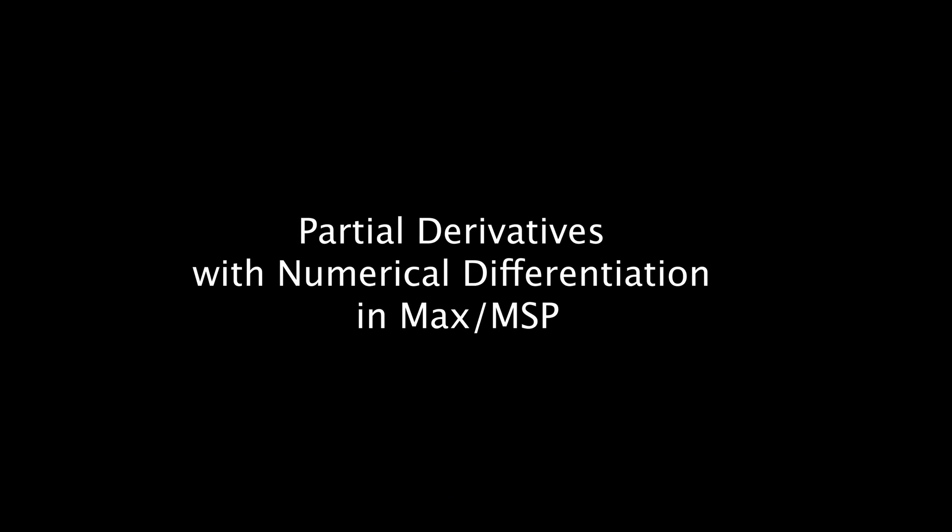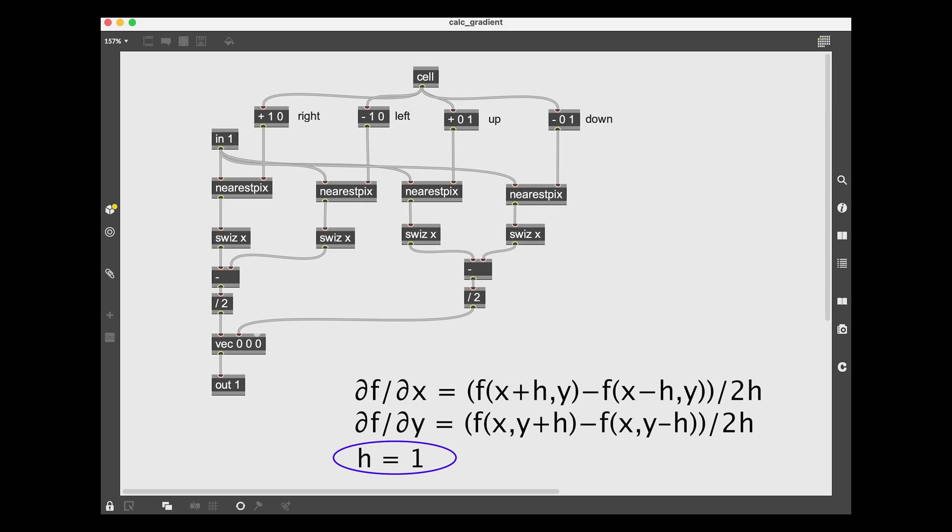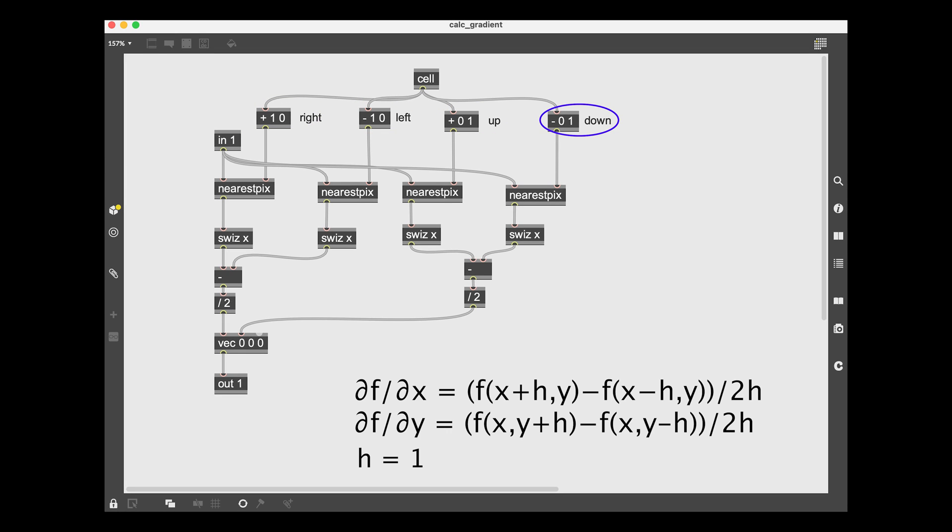Let's now see how we implemented the partial derivatives using the numerical differentiation method in MAX in the previous video. In a discrete grid of cells, like a jitter matrix, the minimum distance we can have between cells is 1, so our distance h is the number 1. The nearest peaks operator means that we are getting the values from different cells as the current one. In fact, we are getting the cells before and after and above and under, then we calculate the approximative derivative using those values by following the formula. So this is f of x plus h with y remaining constant. As you can see, the input coordinate y here is set to 0, and here is f of x minus h.